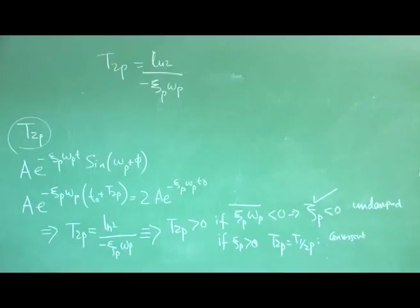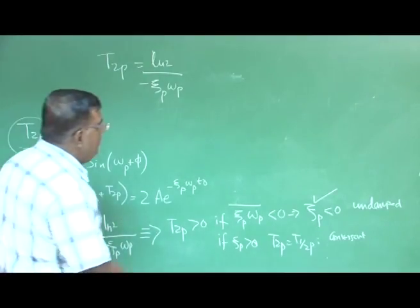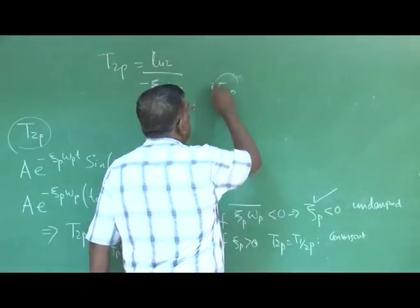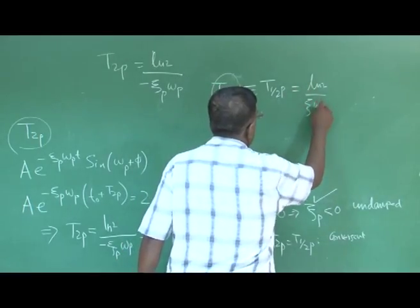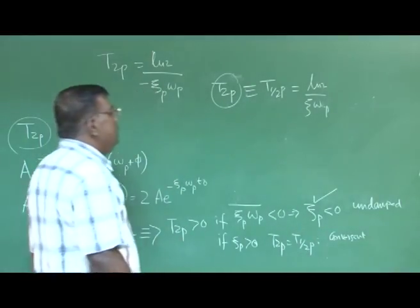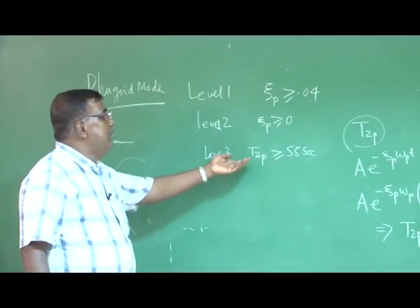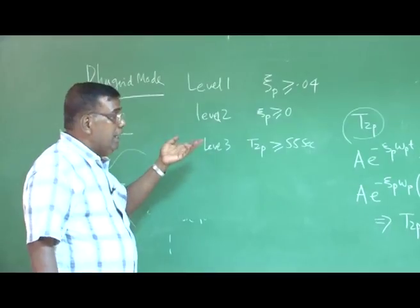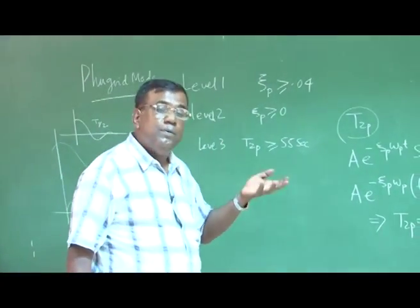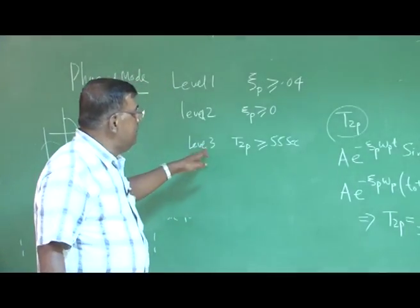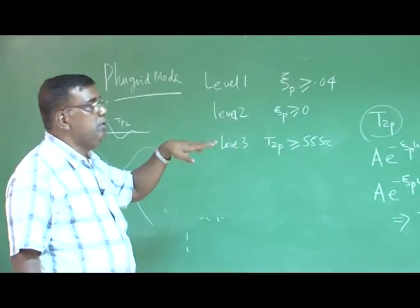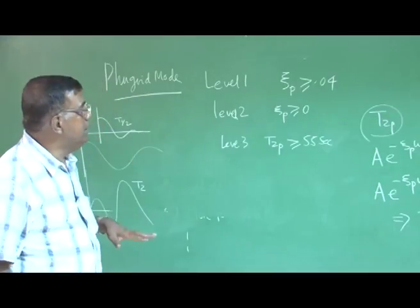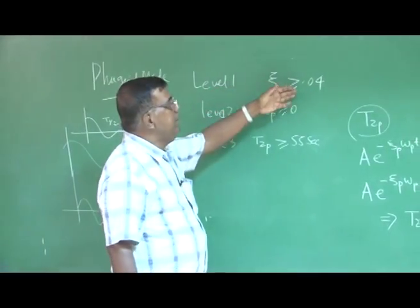If zeta_p is greater than 0, time to double is no longer valid and instead we talk about time to half, which equals ln2 / (ζ_p·ω_p). So for level 3, if time to double is 55 seconds, that means the airplane has a divergent undamped phugoid. But still, if it meets this criterion, the pilot — by putting excessive effort — will be able to control the airplane safely.